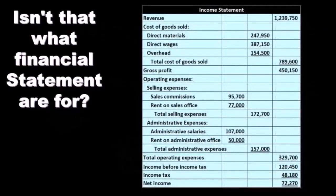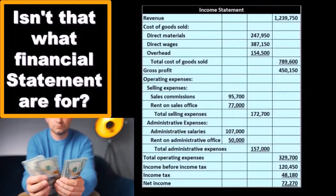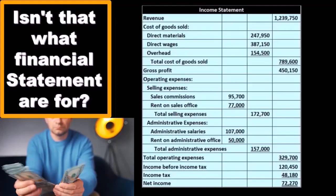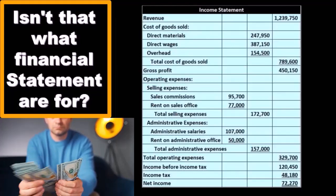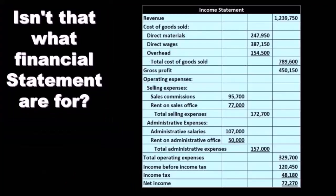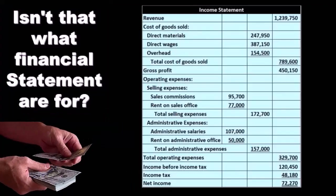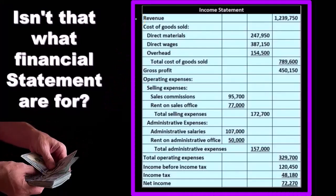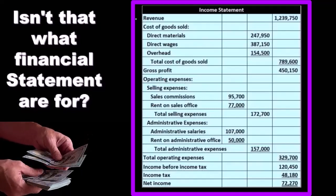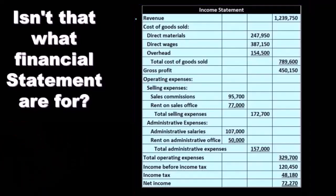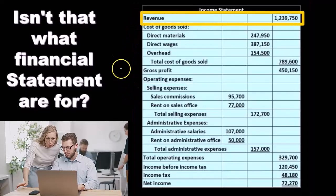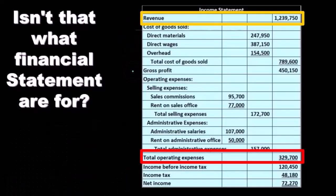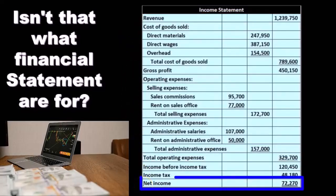Now you might think, isn't that just what the financial statements are for? What about the normal income statement? Isn't that supposed to measure performance, show performance, and help us make decisions in the future? The answer is yes, the financial statements do do that, but there are some limitations in terms of forecasting. The income statement is usually what we consider when evaluating performance — revenue minus expenses — how much revenue did we have and how many expenses did we incur to generate that revenue, giving us that bottom line net income.